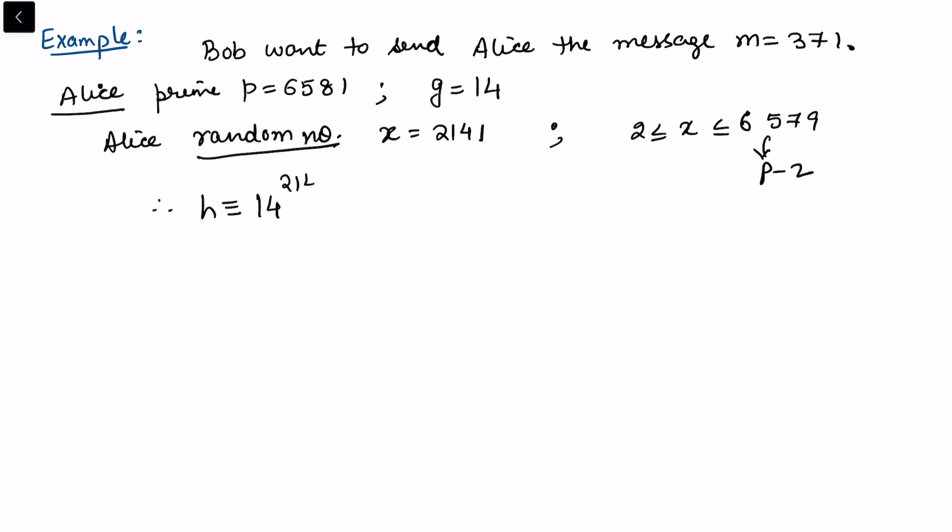So she calculates h which is congruent to 14^2141, so g^x, this is congruent to 1543 mod 6581. So public information, as we have discussed, we should have made public p, which is 6581, g is 14, and we must make public h, that is 1543.